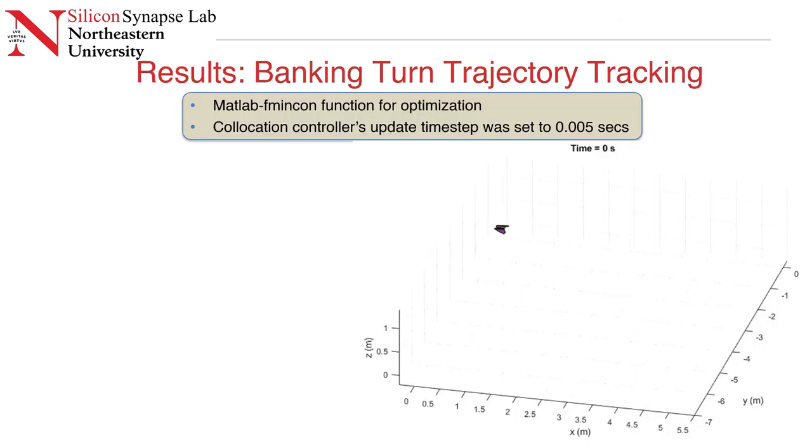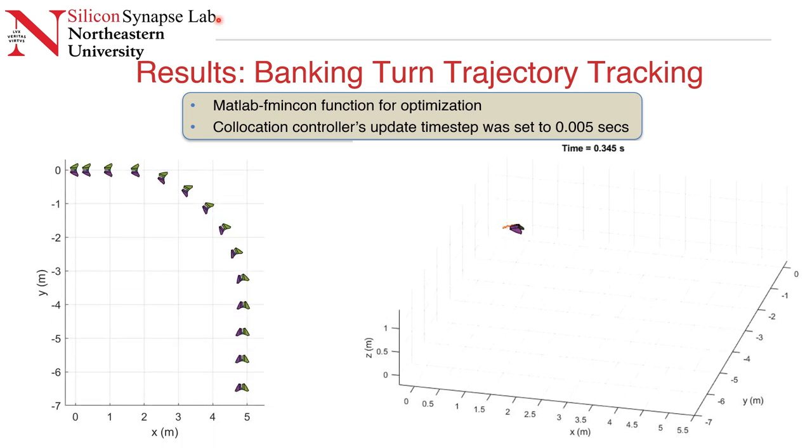This slide shows the results. The modeling and simulation for this dynamic model is performed in MATLAB using fmincon function for optimization. The system of equations was solved numerically employing the fourth order Runge-Kutta method. The simulations were conducted with a time step of 0.0001 seconds while the collocation controller is operating with 200 hertz. This is the simulation video and the picture on the left is the top view trajectory of the aerobat. In this video, it can be seen that the aerobat flying straight and then making a banking turn and again flying straight.